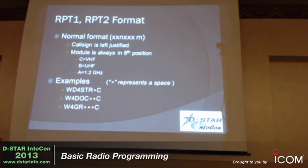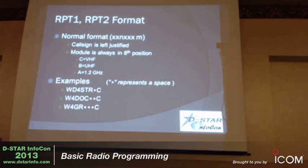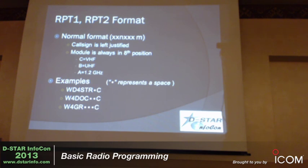Here are some examples with different length call signs. If it's a six-character two-by-three call sign and I want to go to the two-meter module, I have to have a space between WD4STR, space, C. If it's a one-by-three, that's only five characters long, so I have to add two spaces. Add the appropriate number of spaces when putting in the repeater and its module. This goes in Repeat One and Repeat Two, with some exceptions when we talk about UR.